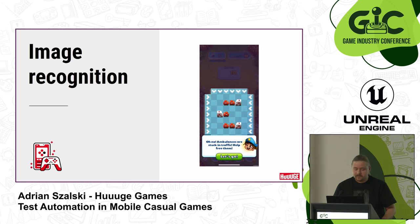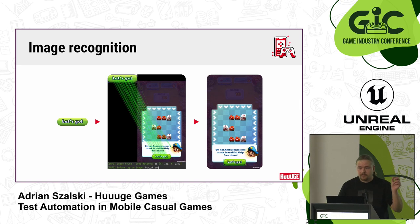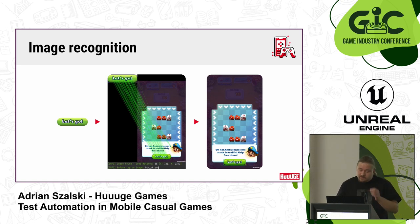Here's an example from Traffic Puzzle. We want to click on the Let's Go button in the middle. On the left side you can see the image fed to the algorithm. In the middle, it's comparing that image to a screenshot made from inside the game. The little green lines represent the similar points between the fed image and the screenshot. Once it finds enough of these points, it creates a rectangle around them and returns the coordinates of this rectangle - which means we now know where to tap.